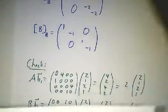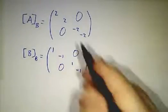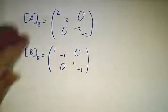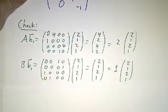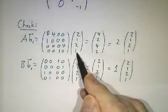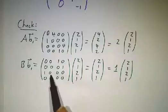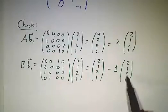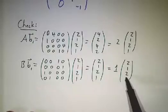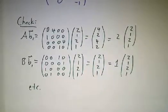Now if you want to check, so in other words, A and B in the B basis take these forms. And if you want to check, you just multiply it out. A times B1, here was A, here's B1. You multiply it out and sure enough, it's twice B1. B times B1, you multiply it out, it's just B1. So B1 really is an eigenvector of A and an eigenvector of B. And you can check for B2, B3, and B4.